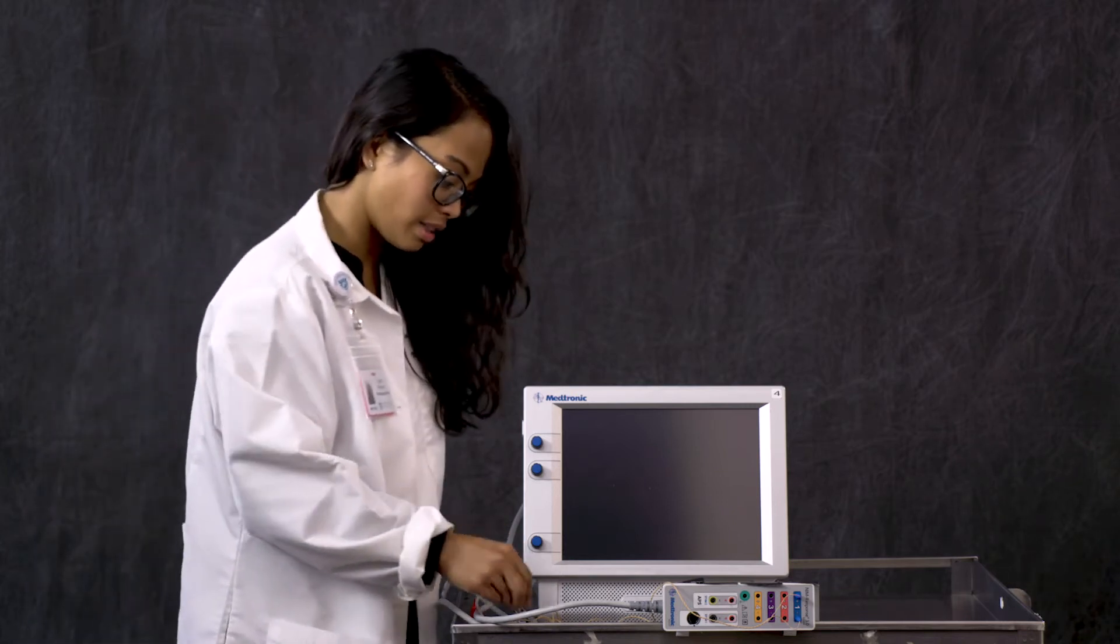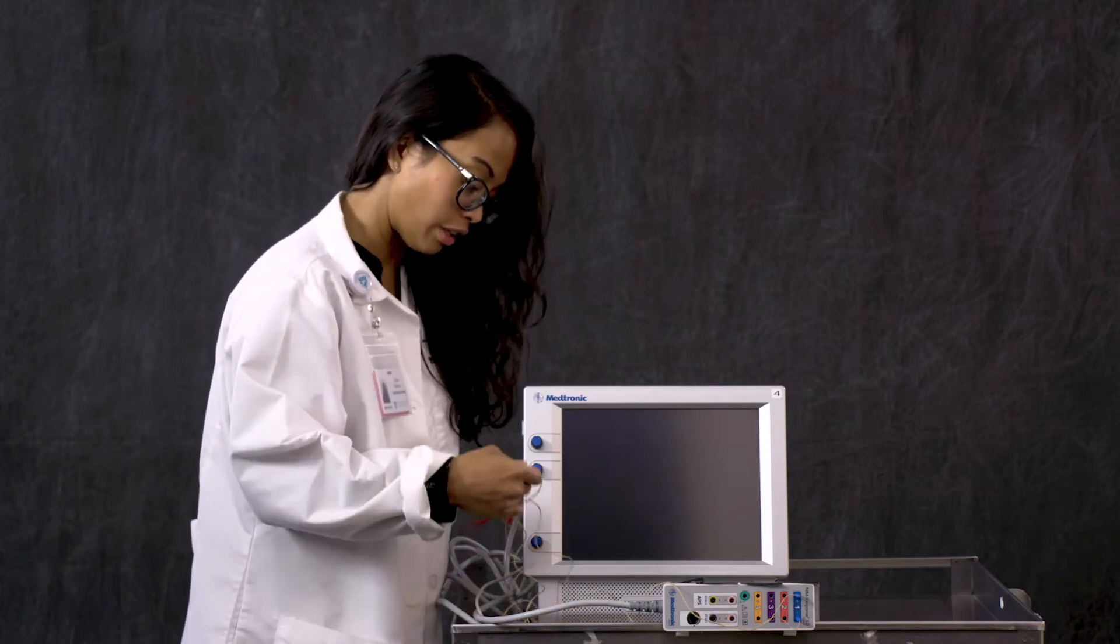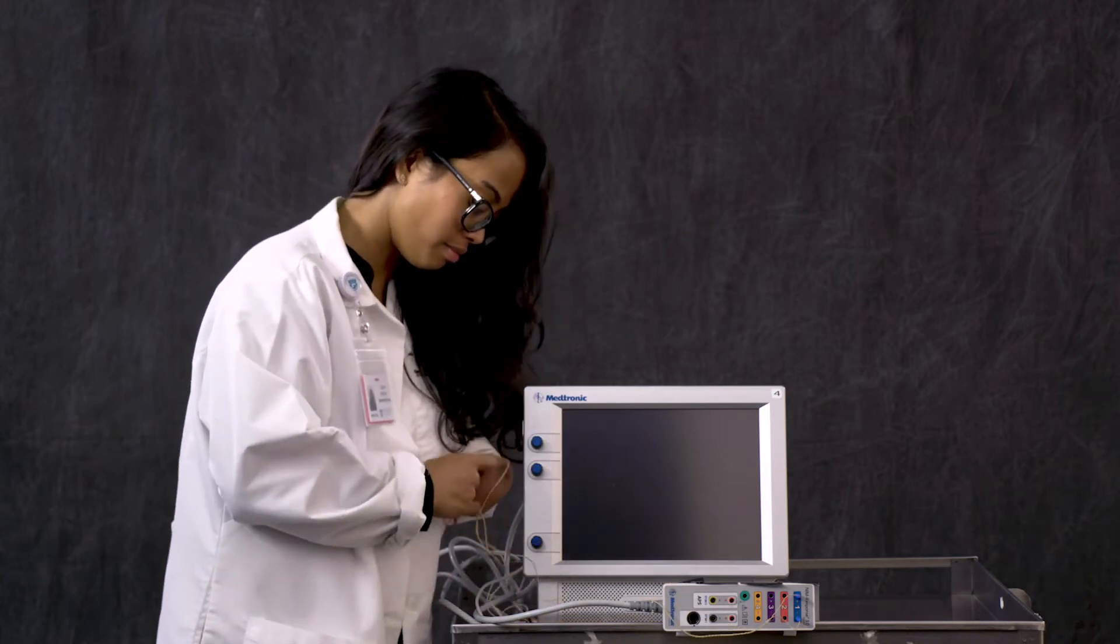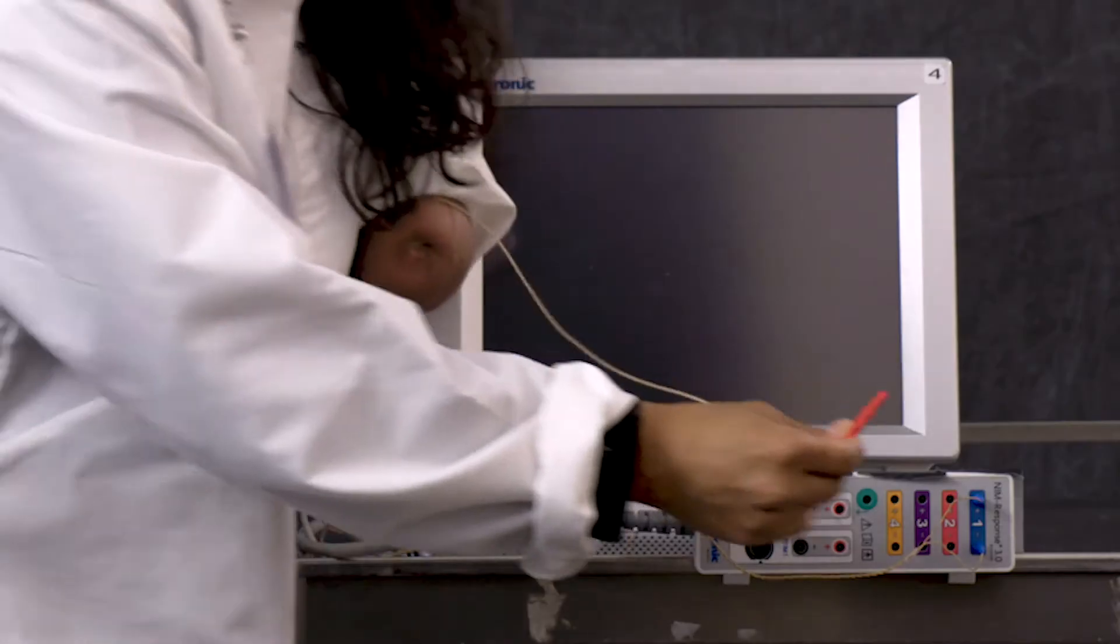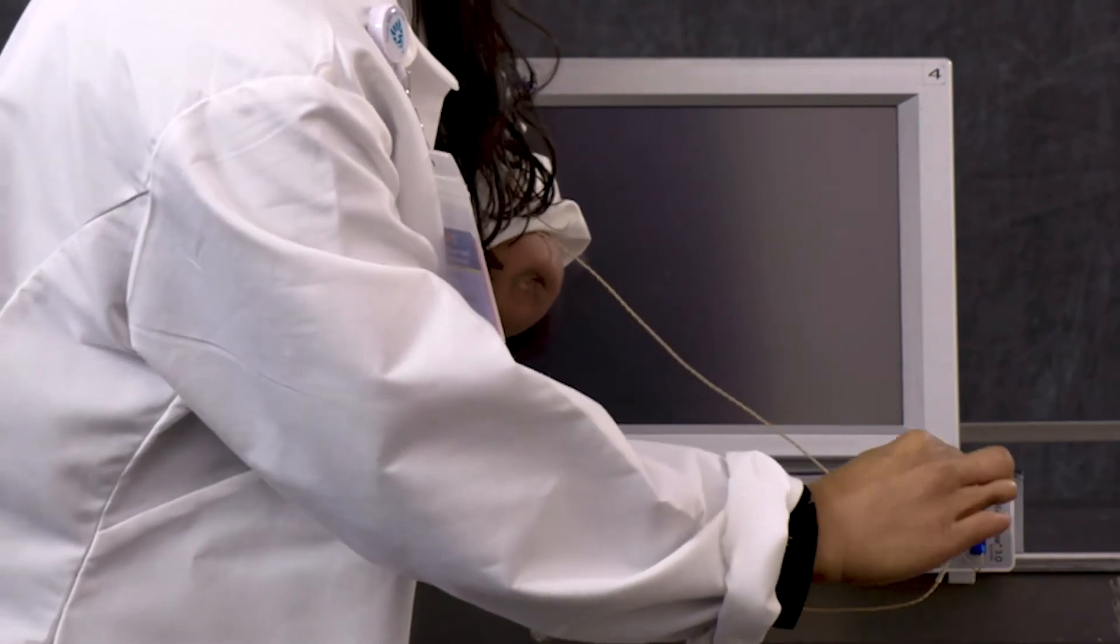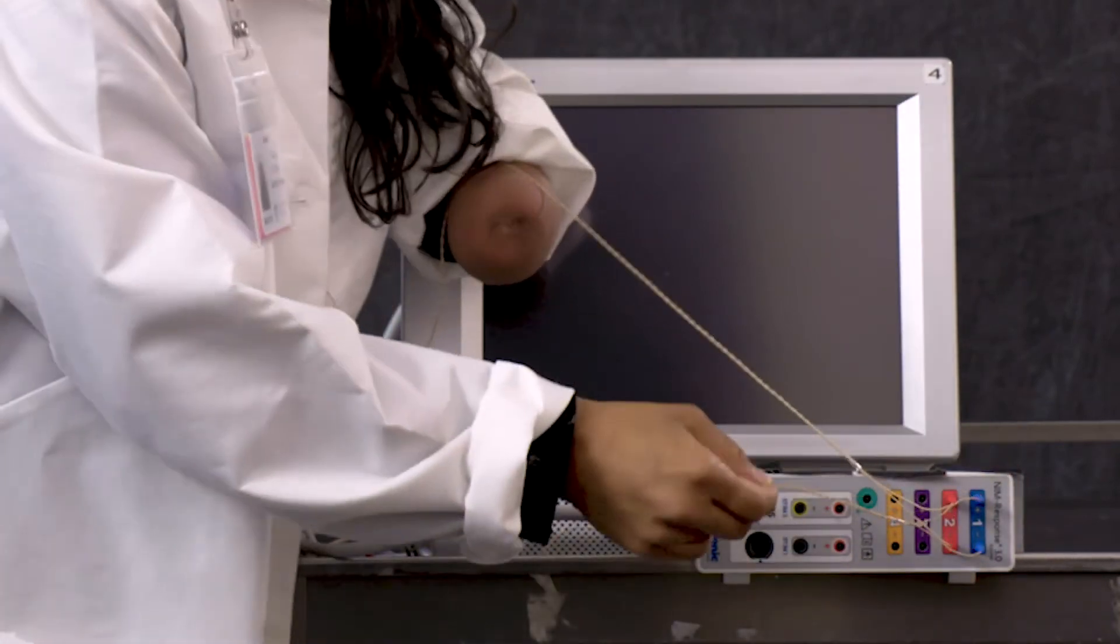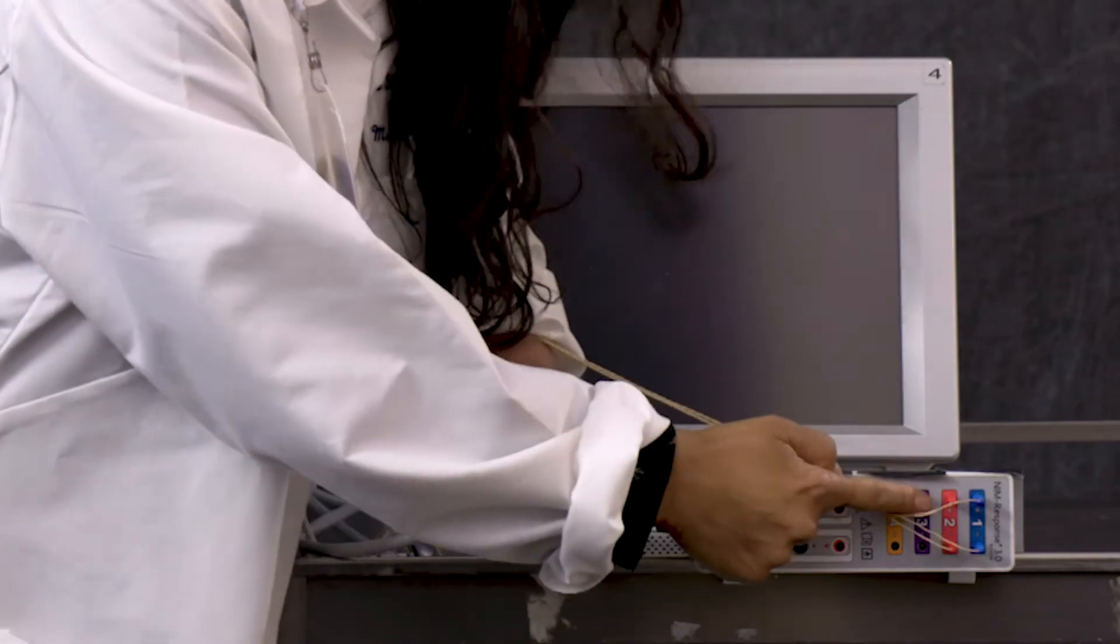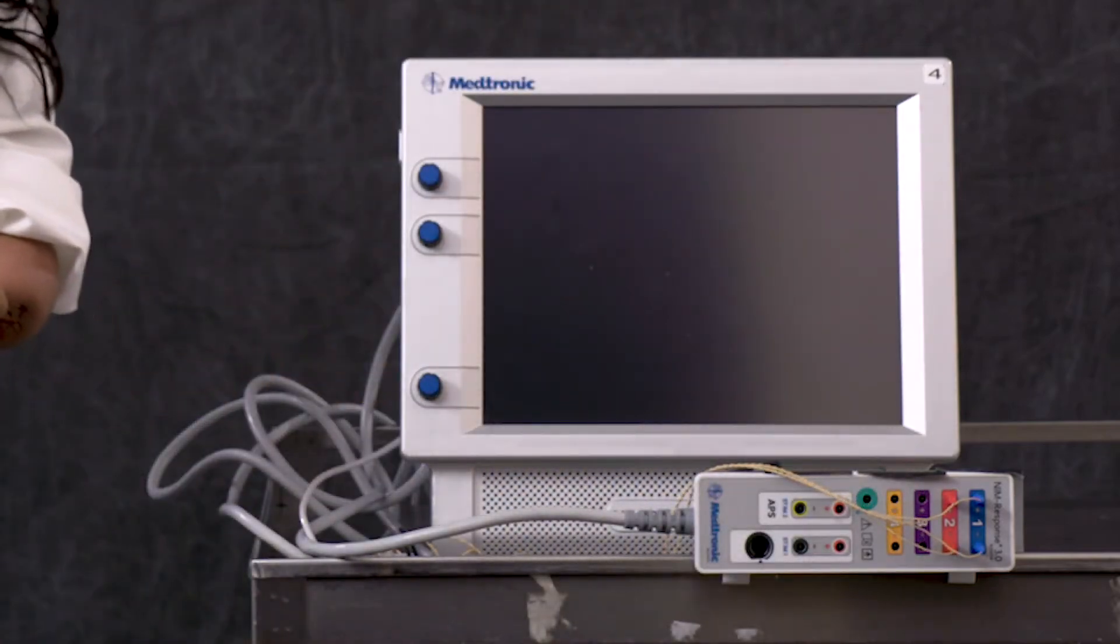The next electrodes that we're going to place are color-coded red, and this is for our hyostyloglossus channel or the exclusion branches or muscle branches of the hypoglossal nerve. These are going into the second channel. The electrodes we are placing towards the back of the tongue superficial to the mucosa.